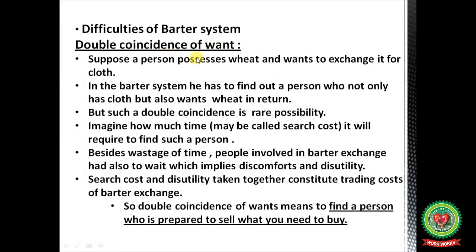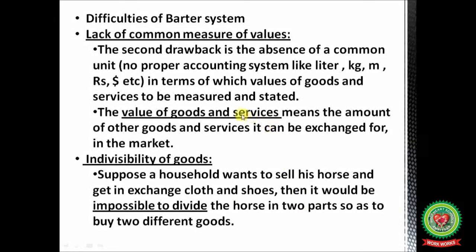The first difficulty of the barter system is the double coincidence of wants. In an economy it is very difficult to find a person who wants to exchange the same things you want to purchase. Suppose a person possesses wheat and wants to exchange it for cloth — he has to find a person who not only has cloth but also wants wheat. Such a double coincidence is a rare possibility. The time and effort required constitutes search cost, and discomfort while waiting constitutes disutility, together forming the trading cost of barter exchange.